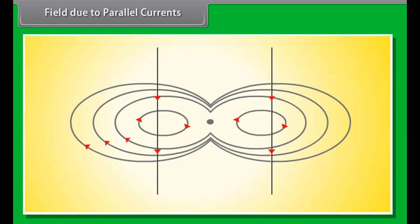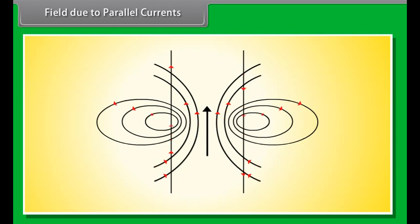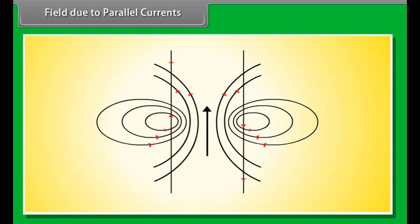Field due to parallel currents: When two parallel conductors carry current in the same direction, the combined magnetic field pattern indicates attraction between the conductors. When they carry currents in opposite directions, the pattern of the magnetic field indicates repulsion between the conductors.